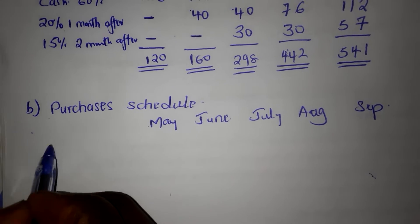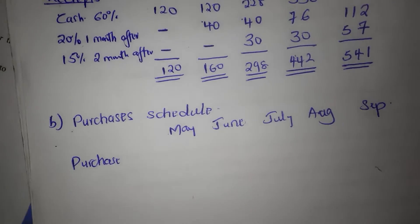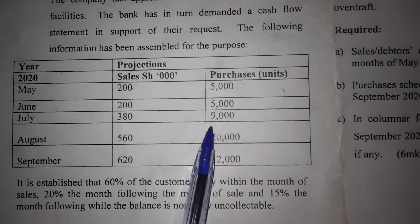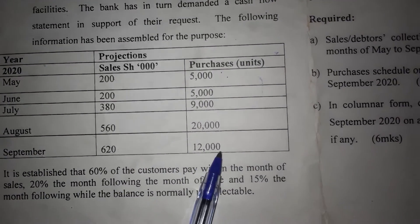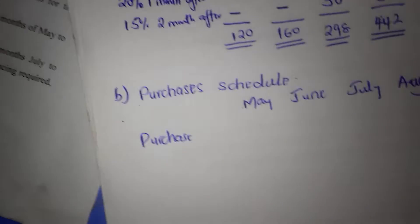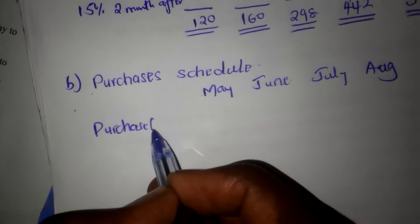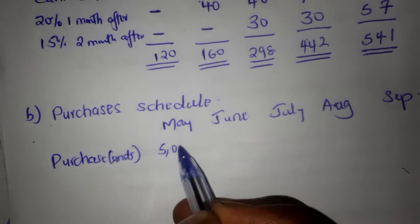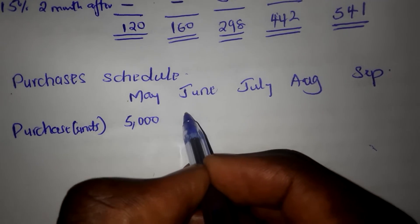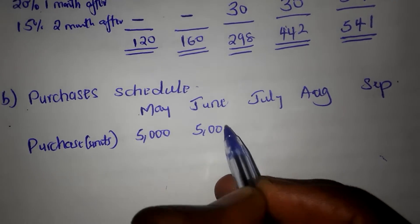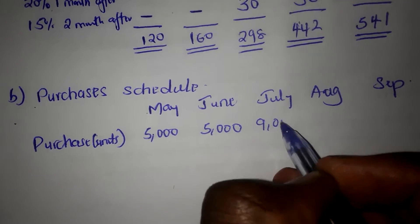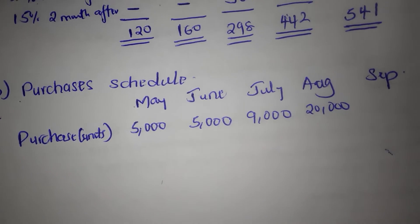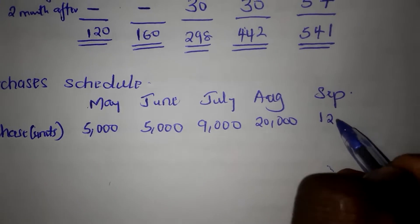We have the purchases column. Coming back to the question, the purchases for each month were given from May to September in units. May had 5,000, June had 5,000, July had 9,000, August had 20,000, and September had 12,000. These are all in units, not in value.